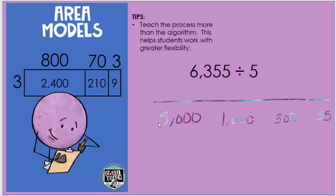And then students can create the model showing the partial dividends. We have four partial dividends and our divisor is going to be five. And then they'll put their partial quotients above each section. So five thousand divided by five is one thousand. One thousand divided by five is two hundred. Three hundred divided by five is sixty. And fifty five divided by five is eleven. So to find the answer, you just add up your partial quotients and there it is.